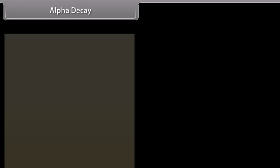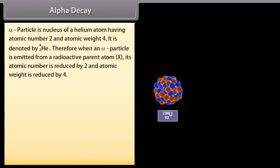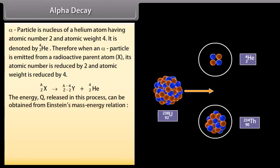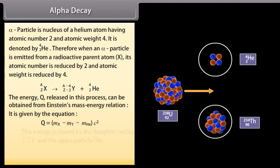Alpha decay. Alpha particle is nucleus of a helium atom, atomic number 2 and atomic weight 4. It is denoted by... Therefore, when an alpha particle is emitted from a radioactive parent atom X, its atomic number is reduced by 2 and atomic weight is reduced by 4. It can be demonstrated as... The energy Q released in this process can be obtained from Einstein's mass energy relation. It is given by the equation Q is equal to MX minus MY minus M HE into C square.